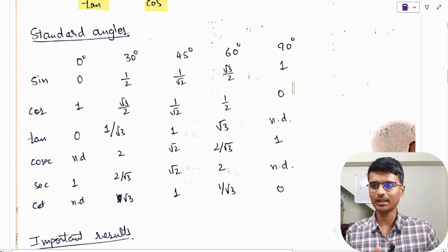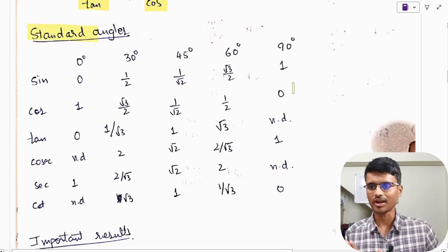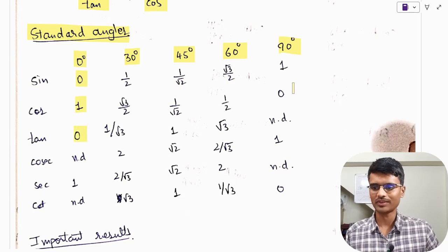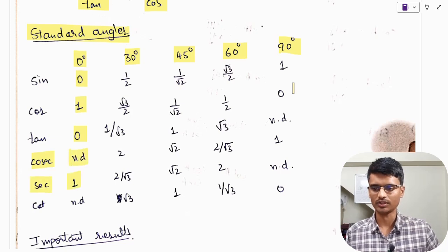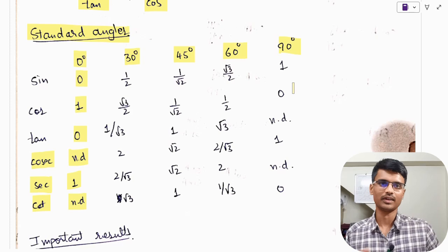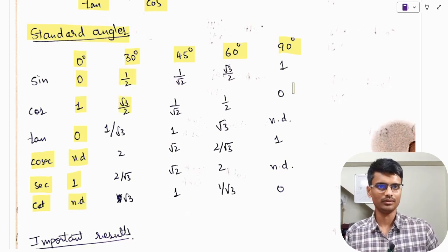Let us quickly recall the trigonometric ratios of standard angles: 0°, 30°, 45°, 60°, and 90°. Sin 0° = 0, cos 0° = 1, tan 0° = 0; cosec 0° and cot 0° are not defined; sec 0° = 1. For 30°: sin 30° = 1/2, cos 30° = √3/2, tan 30° = 1/√3. For 45°: sin 45° = 1/√2, cos 45° = 1/√2, tan 45° = 1.